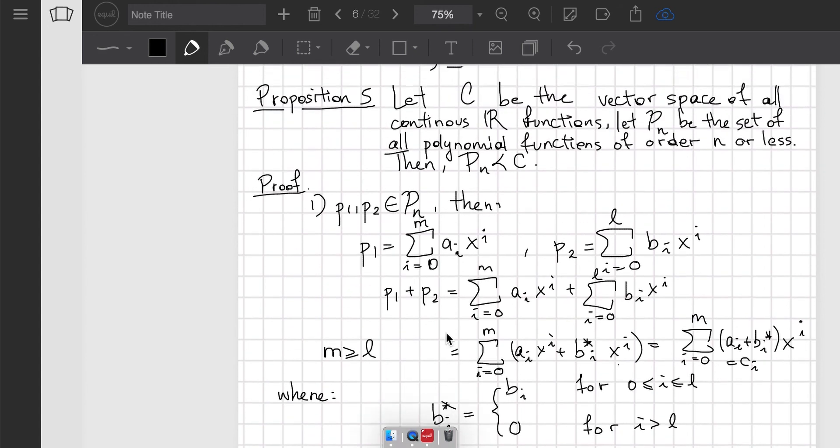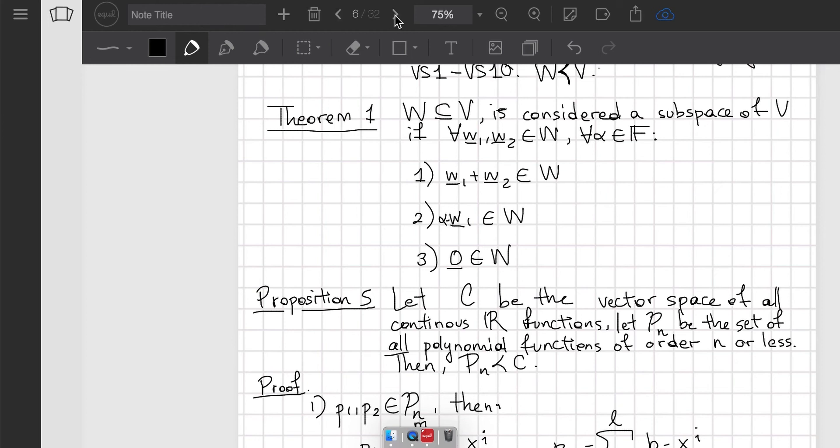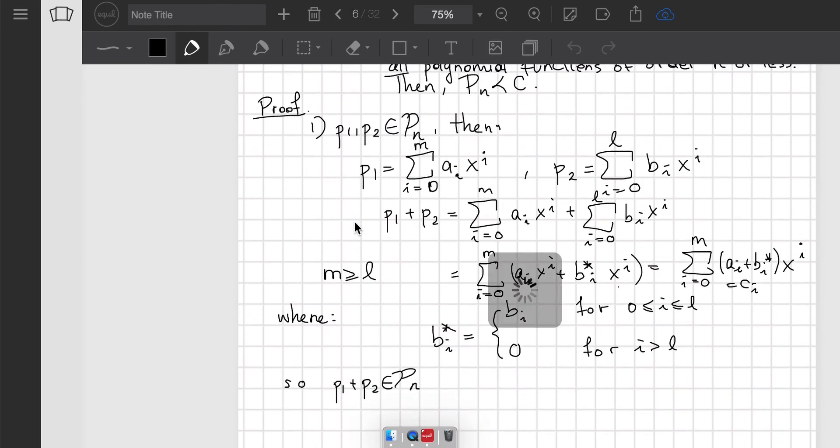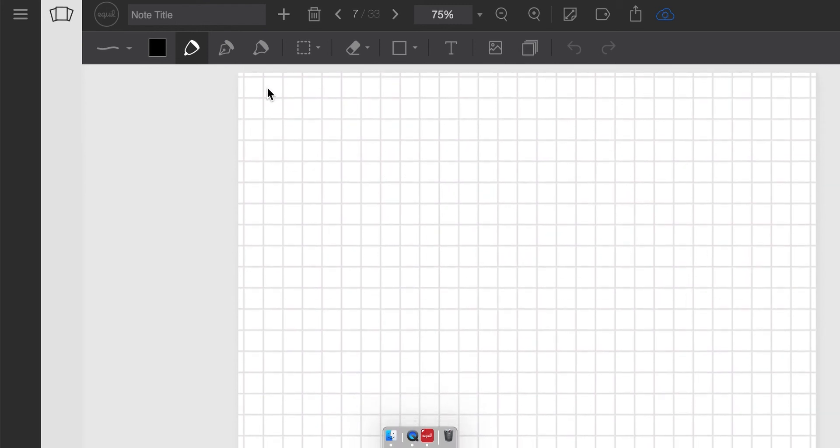We have proven the first condition. Let's now prove the second one: closure under scalar multiplication. It's going to be in a very similar fashion to the first condition. Let p belong to P_n. Then we can write p as this sum.